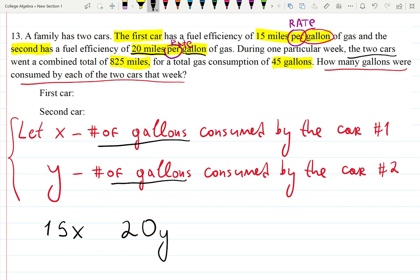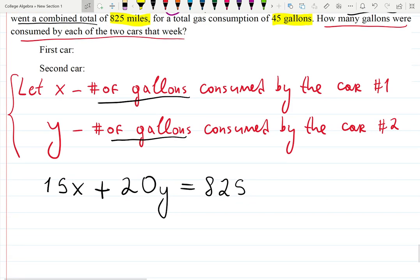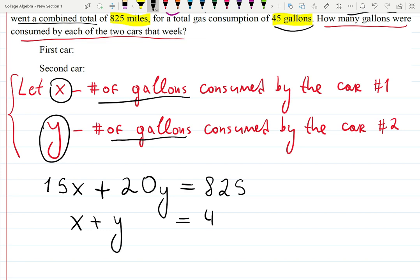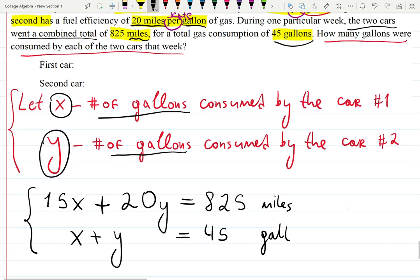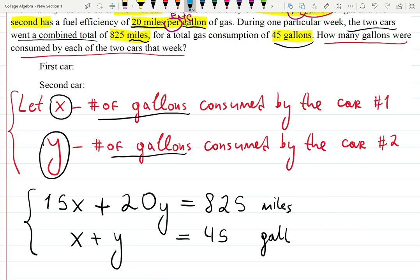For the particular week, the two cars together combined — and 'combined' mathematically means a plus sign. Combined, they went 825 miles, so: 15x plus 20y equals 825. They also consumed 45 gallons combined. Since x and y are both in gallons, x plus y equals 45. Always check that units match: the first equation is in miles, the second is in gallons.